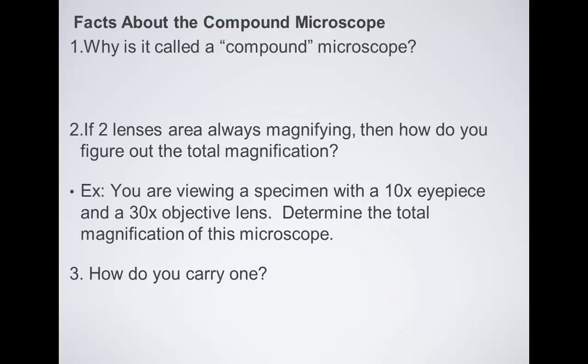Alright, so let's talk about a few facts about the compound microscope. It's called a compound microscope. Like what's a compound word? Yeah, doghouse. Playground. So it's made of two words put together. A compound microscope is called that because it has two lenses working together. The eyepiece and the objective lens. They both magnify the image.